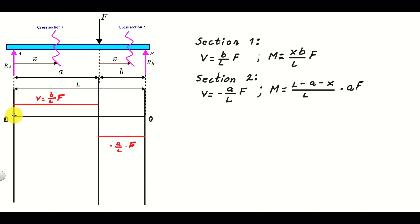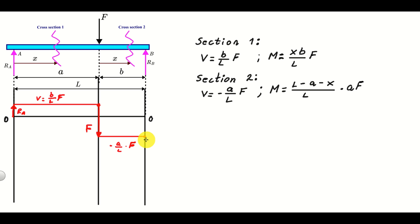A few observations about the shear force diagram: at the start, we jump from zero to RA — it's always a good idea to label this as RA. Then there is a downward jump equal to force F when we pass the load. Finally, we jump back up to zero due to RB at the end. The internal force diagram should start at zero and end at zero.